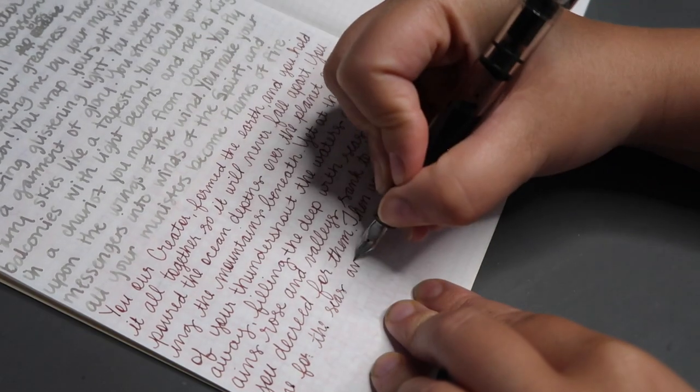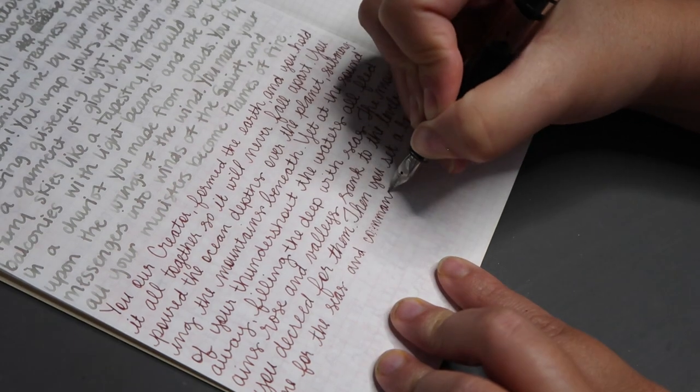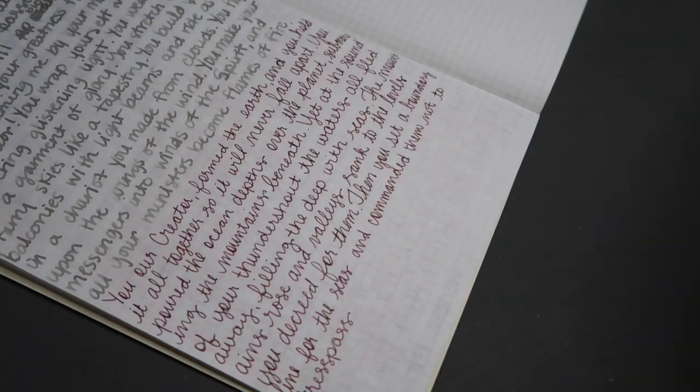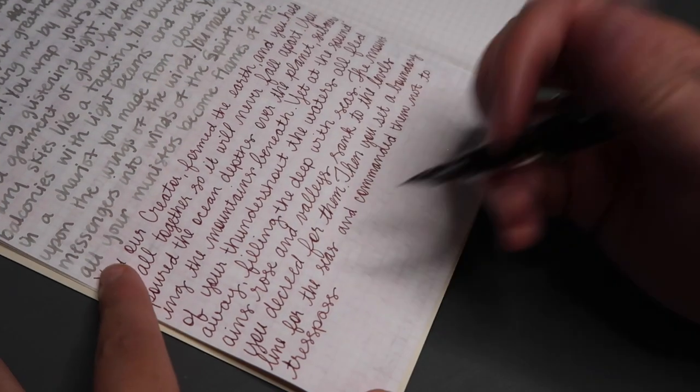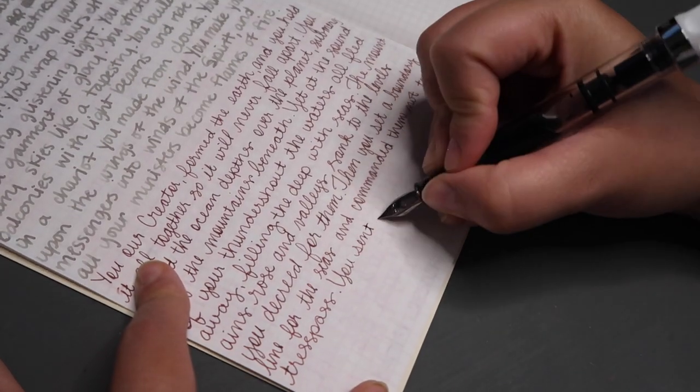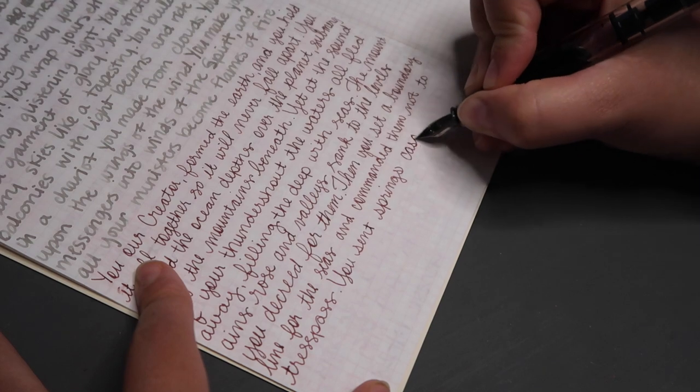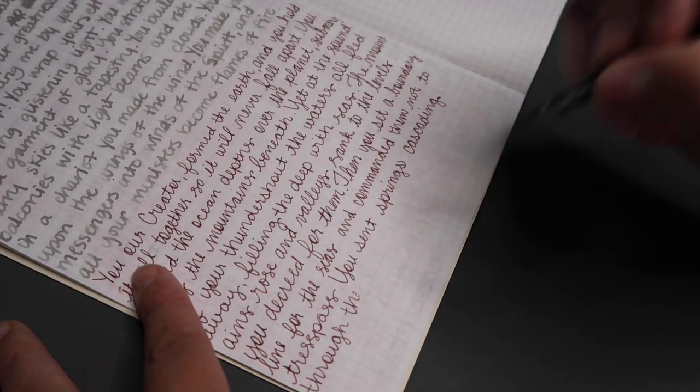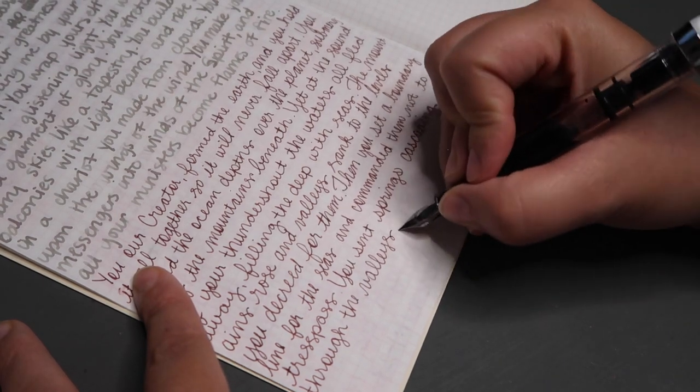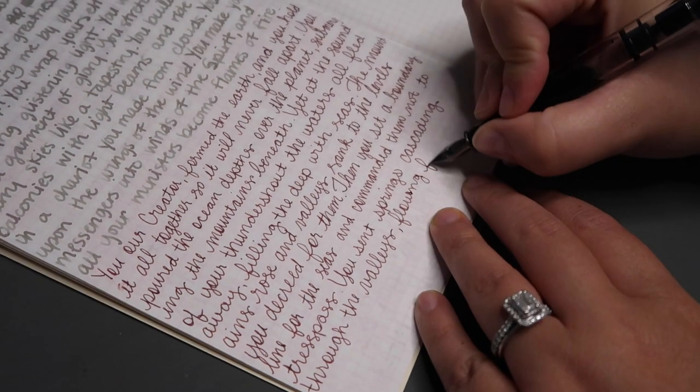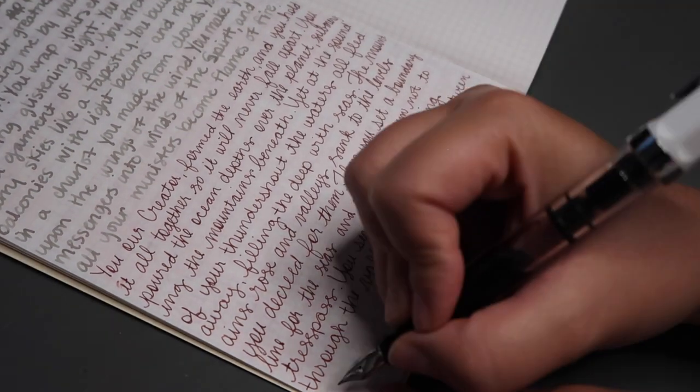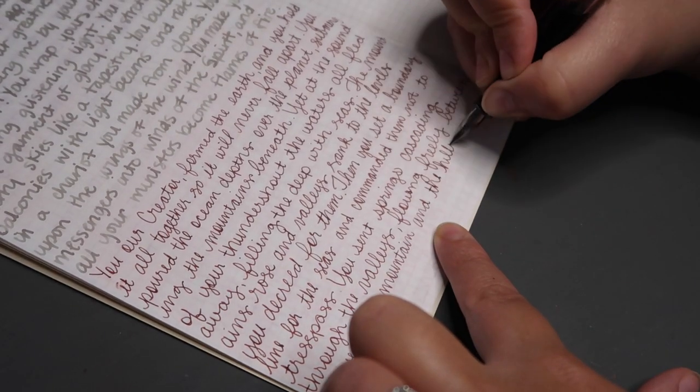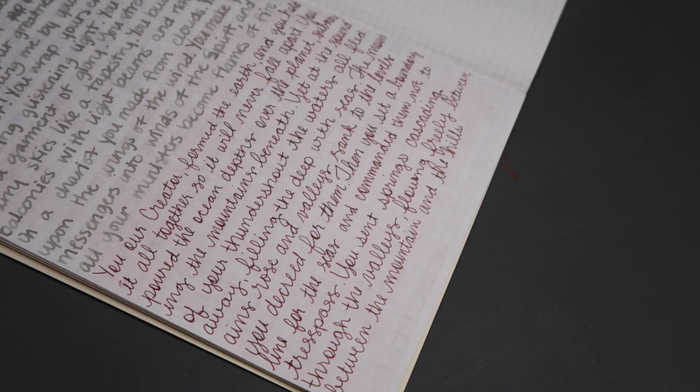You, our Creator, formed the earth, and You hold it all together so it will never fall apart. You poured the ocean depths over the planets, submerging the mountains beneath. Yet at the sound of Your thunder shout, the waters all flood away, filling the deep with seas. The mountains rose and valleys sink to the levels You decreed for them. Then You set a boundary line for the seas, and commanded them not to trespass.